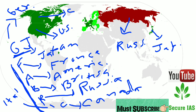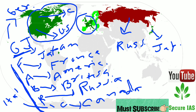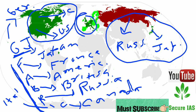We have located four countries, and here are the other four European countries. On the east side is Germany, on the west is France, in the south is Italy, and in the north is British.